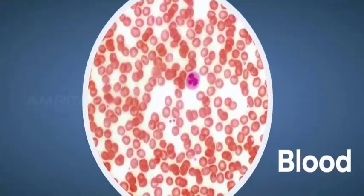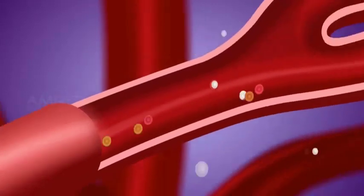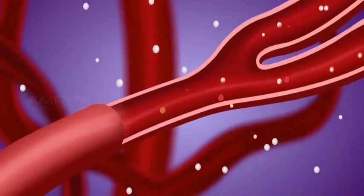The blood contains RBC, WBC, and platelets that transport gases and other materials to different parts of the body. Blood has a fluid matrix.